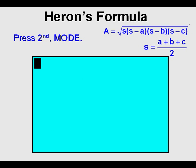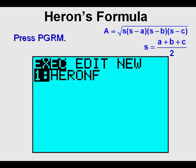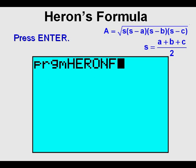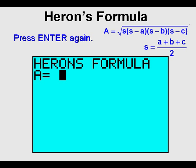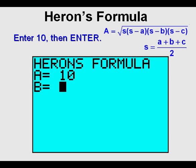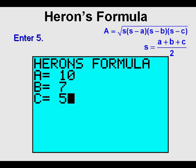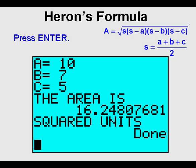Let's test the program. Get out of this mode by pressing 2nd, then the mode key next to it for Quit. To try the program, press the program key and press Enter to choose HERON F, then press Enter again. We're going to try the same triangle we solved earlier by entering 10 for A, then press Enter. Now enter 7 for B, then Enter. And finally enter 5 for the last side, then press Enter. This is the same number as when we did the problem with the formula earlier — 16 and one-fourth approximately — and that demonstrates that the program was done correctly.